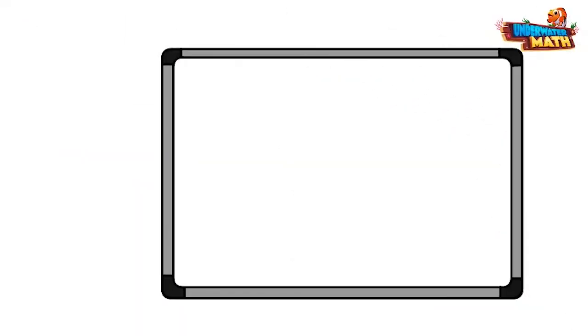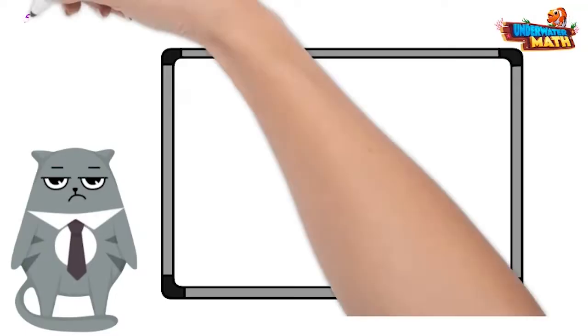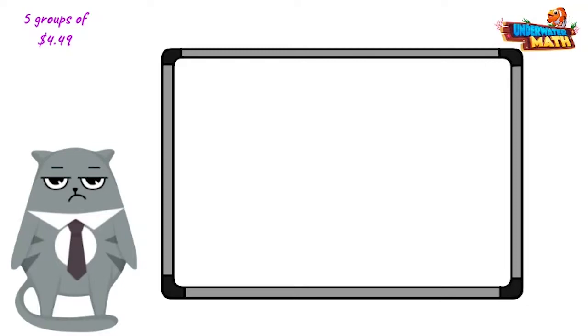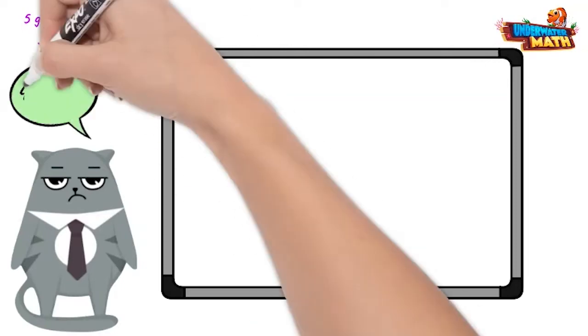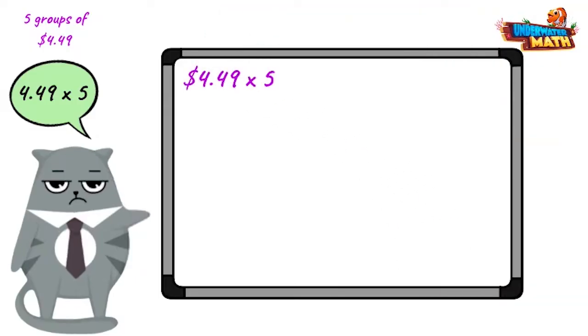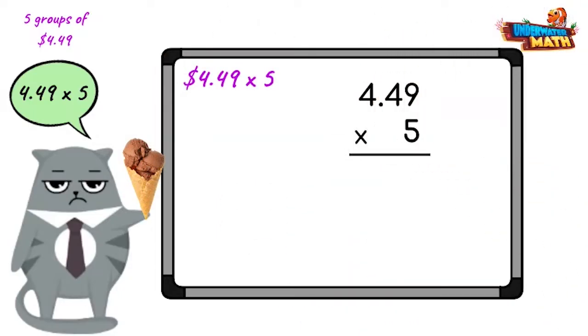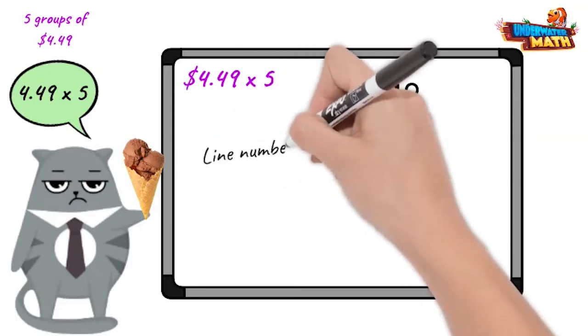What is the standard algorithm? Sounds complicated. It's just a step-by-step way to solve a problem. In this case, we have five groups of four dollars and 49 cents. That's decimal multiplication. You got it. I'm technically on my break, I'm gonna need an ice cream for this. In decimal multiplication, we stack the numbers just like multiplication with whole numbers. We line the numbers up on the right.